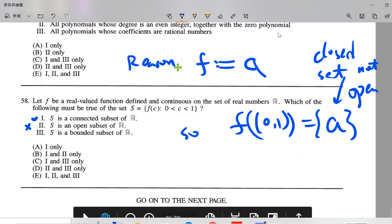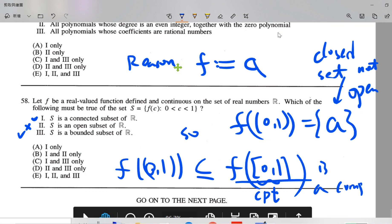And the third, S is a bounded subset of R. This is correct because the open interval (0,1) is a subset of the closed interval [0,1], and this is compact. And f is continuous. So basically, this is a compact set.